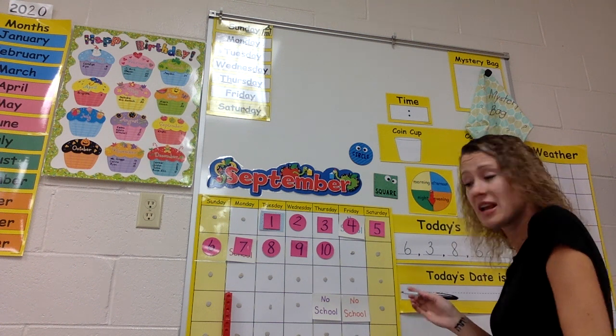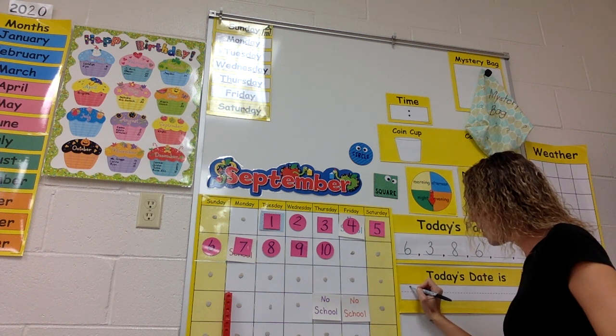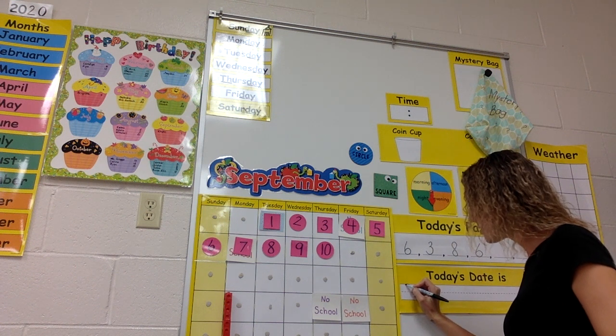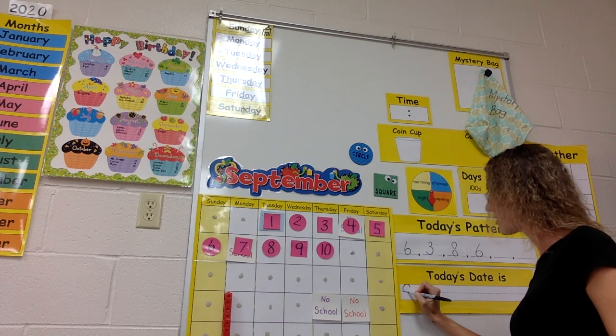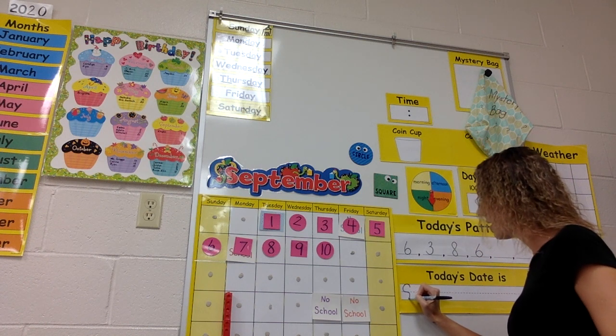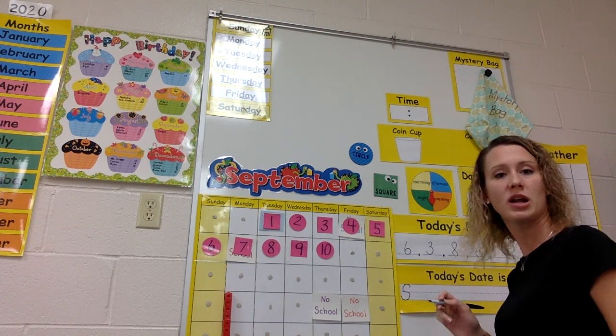So uppercase S goes up to strawberry, around to vanilla, back and around to chocolate.